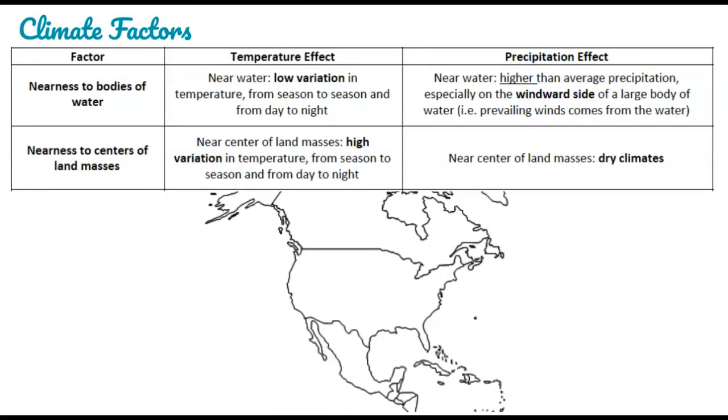So the next climate factor has to do with where you are on a continent. Are you on the coastal area or are you in the center of a large landmass? So let's talk about temperature first. If you are on a coast near the water, the temperature is going to be a little bit more stable, and that is because water heats and cools slowly. So there isn't drastic change day to night or even seasonally.